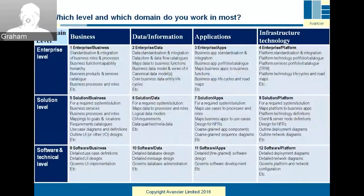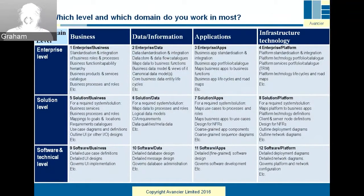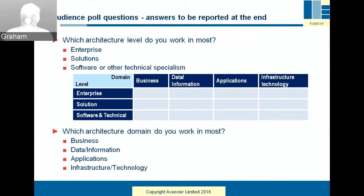We use a chart of three levels — enterprise, solution, and software or other technical specialism — top to bottom; and four domains: business, data/information, applications, and infrastructure technology, left to right. I ask people in classes to pitch themselves in this space. Poll questions: which architecture level do you work in most — enterprise, solution, or software/other technical specialism? And which architecture domain do you work in most — business, data, applications, or technology?